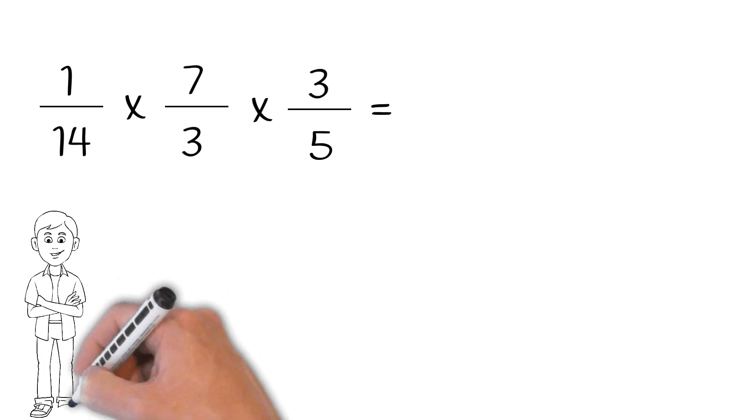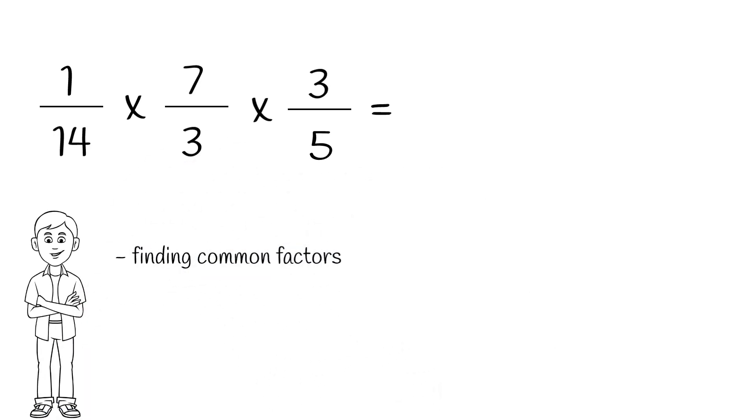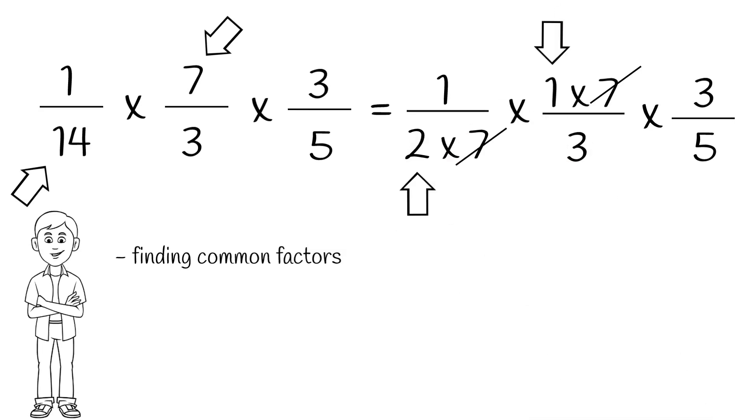Yes. All we have to do is simplify our numbers first by finding common factors, and as soon as we've already simplified them, then multiply the top numbers together and the bottom numbers together. 14 and 7 can be written as 2 times 7 and 1 times 7 since they have the common factor 7. Cross them out, and that leaves us 2 and 1.